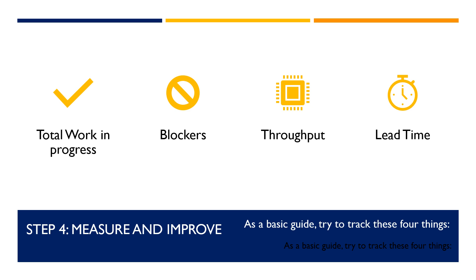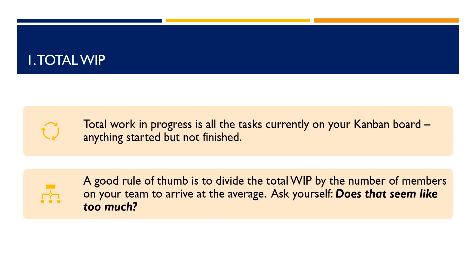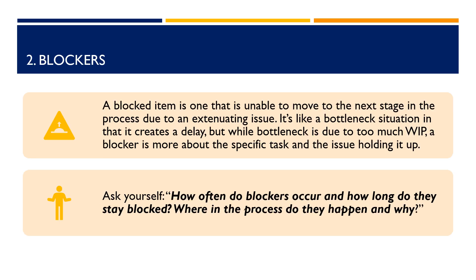Total work in progress is all the tasks currently on your Kanban board — anything started but not finished. A good rule of thumb is to divide the total WIP by the number of members on your team to arrive at the average, then ask yourself: does that seem like too much? A blocked item is one that is unable to move to the next stage in the process due to an extenuating issue. It's like a bottleneck situation in that it creates a delay, but while a bottleneck is due to too much WIP, a blocker is more about the specific task and the issue holding it up. Ask yourself: how often do blockers occur and how long do they stay blocked? Where in the process do they happen and why?